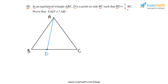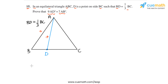So we get AD. We have to prove that 9 times AD squared is equal to 7 times AB squared. AD is this segment and AB is this side of the triangle. We are given that BD is one-third of BC.